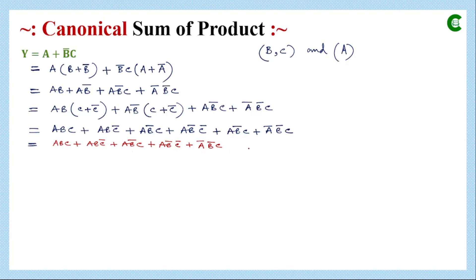This logical function Y has five minterms and this is now in canonical form. If we rearrange all these minterms as per their occurrence in the truth table, and then represent the function in the compact third format, we use the sigma symbol with small m at the bottom and write their corresponding decimal numbers within brackets.